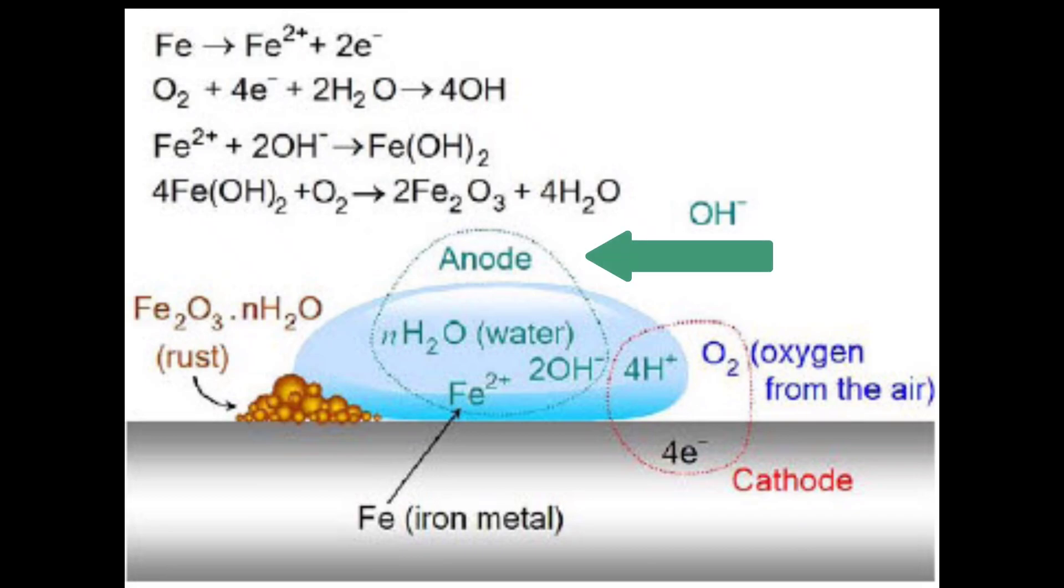First, anodic reaction will take place: Fe will become Fe²⁺ plus 2e⁻.